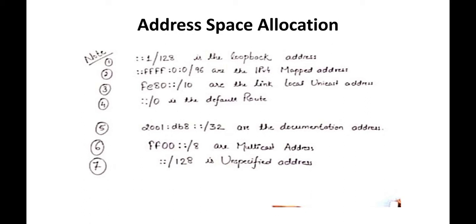The routers accept the packet and send it to the destination system. In general, the default route is used when we don't know the destination — we send the packet to all routers, and the routers decide the shortest path. The router knows the destination address and determines what to do: discard, terminate, or forward the packet.